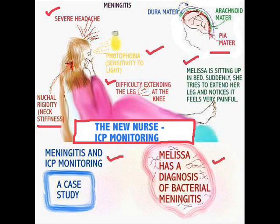Let's talk about why a patient would need intracranial pressure monitoring. Here's one example: we've got Melissa, she has meningitis — that is an indication. What are the symptoms of meningitis? She's got nuchal rigidity, neck stiffness, difficulty extending her legs, and intolerance to light, photophobia.